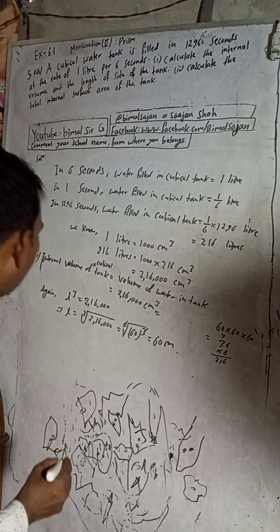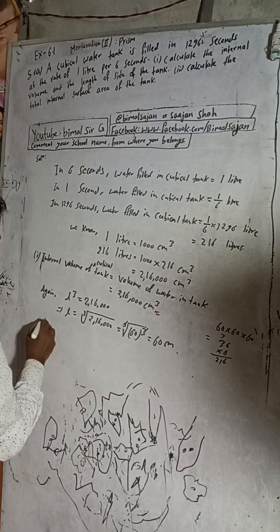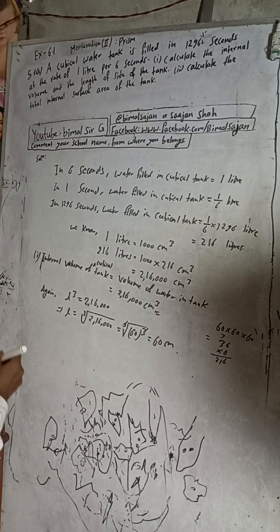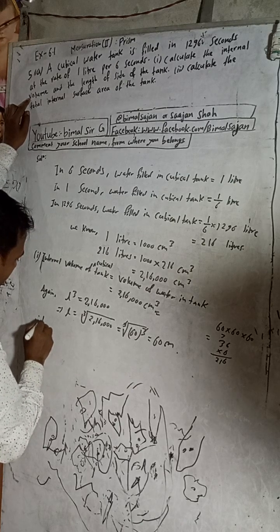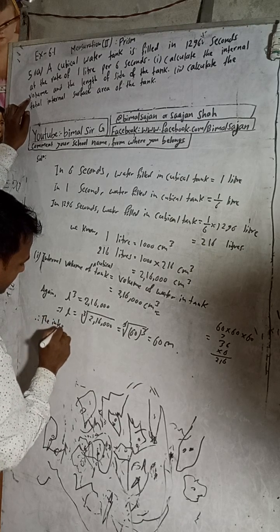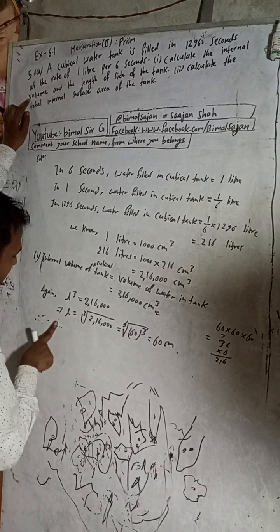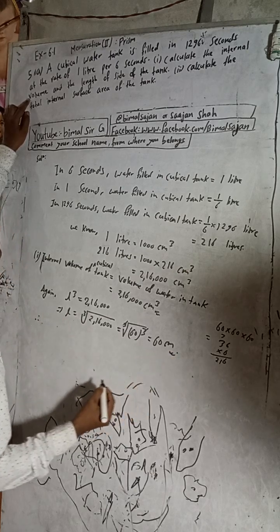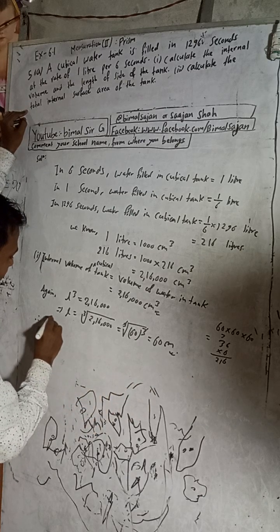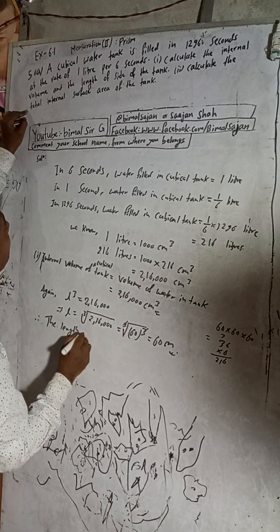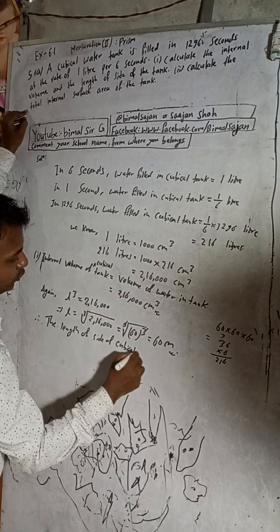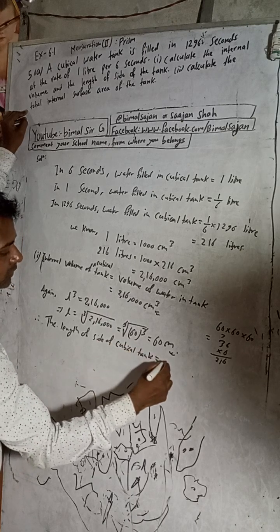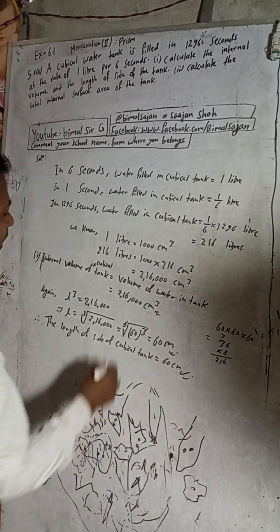The cube root of 216,000: let's check — 60³ = 60 × 60 × 60 = 216,000. So L = 60 cm. Therefore, the length of the side of the cubical tank is 60 cm.